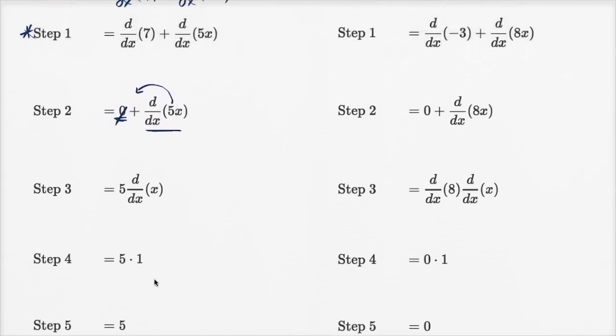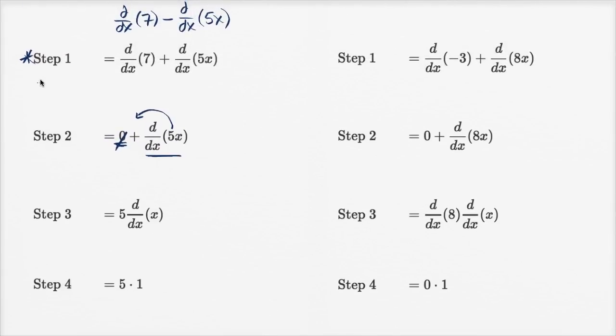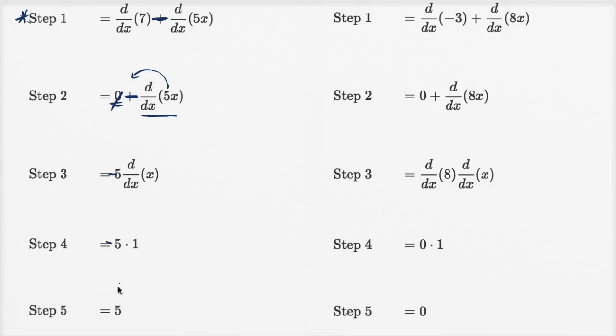At the end they just ask, what step did Avery make a mistake? She clearly made a mistake at step one. This right here should have been a negative. If that's a negative, then that would have been a negative, then this would have been a negative, then that would have been a negative, and her final answer should have been negative 5.